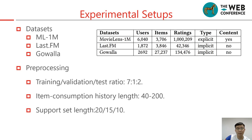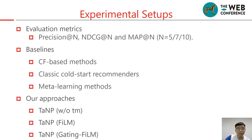In the experimental settings and setups, we use three datasets: MovieLens 1 million, LastFM, and Gowalla. We also list the preprocessing details. Evaluation metrics include precision, NDCG, and MAP. The baseline models include CF-based method, classical cold-start recommenders, and meta-learning methods. Our method has three variants.